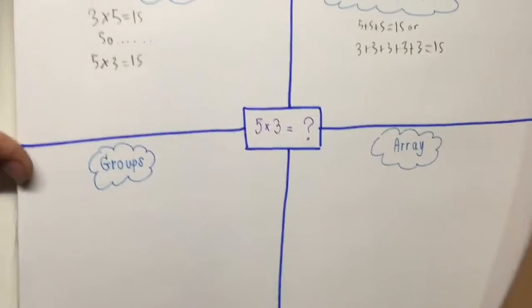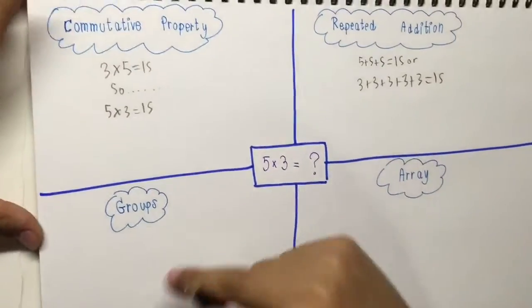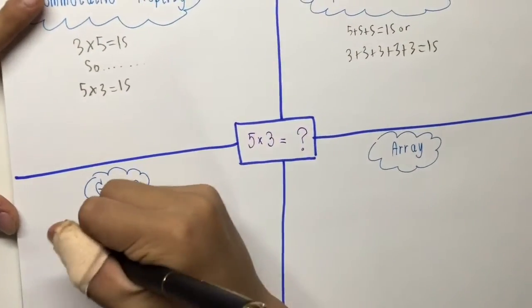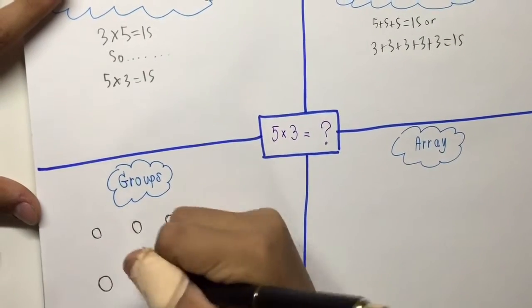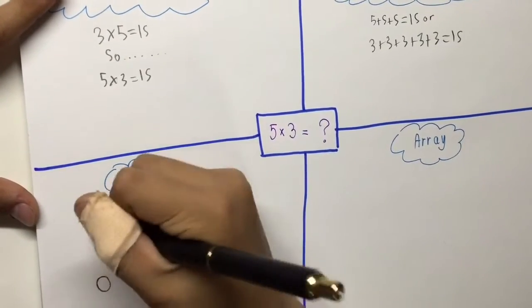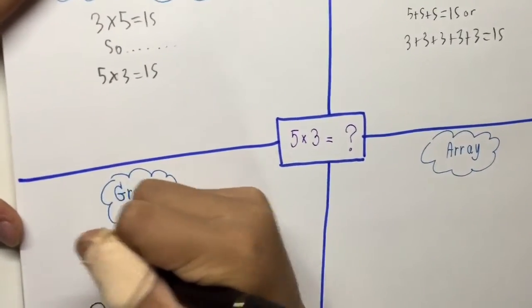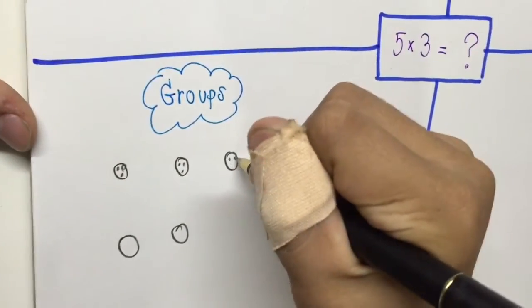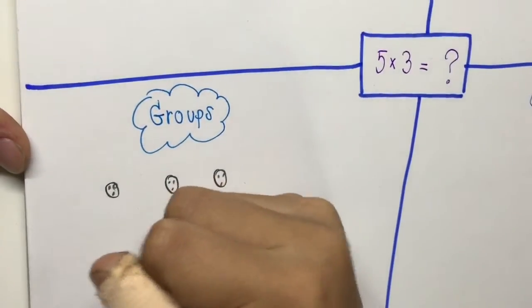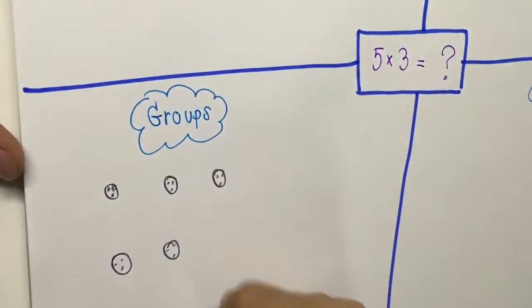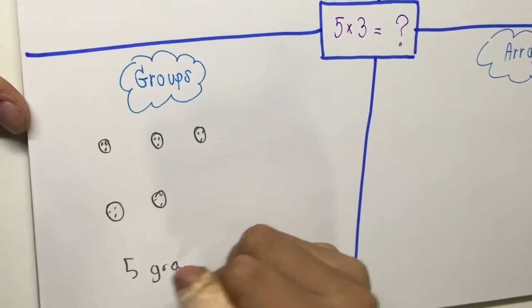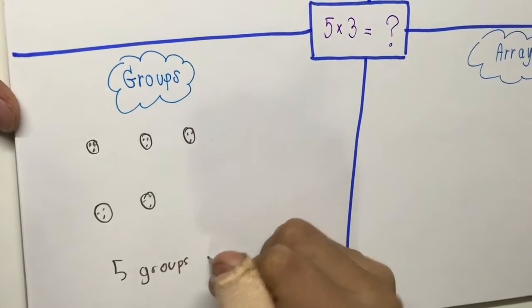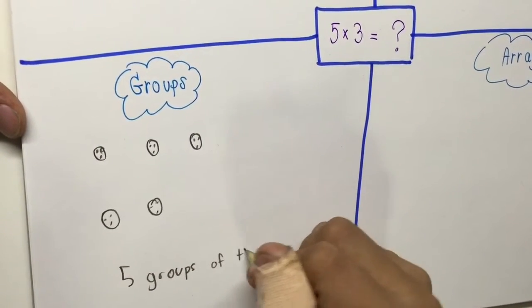Now we go to the groups. There are 5 groups, and there are 3 in each group. So it should be 5 groups of 3.